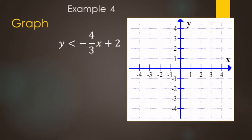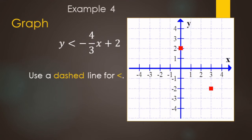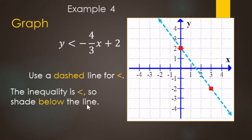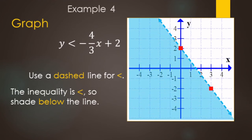Another example: we're going to graph the solutions to y is less than negative four-thirds x plus 2. We start with the y-intercept at 2 for our boundary line. The slope is negative four-thirds, so we go down 4 over 3 to find another point. Since it's strictly less than, we use a dashed line for the boundary. Since it's less than, we shade below the line. That gives us the solution set to y is less than negative four-thirds x plus 2.